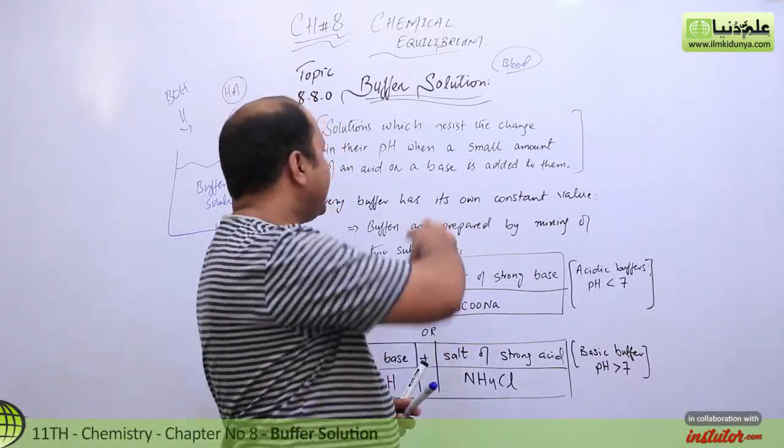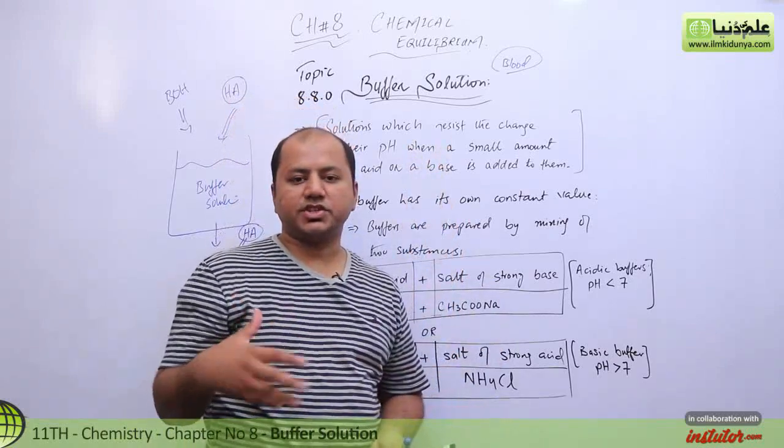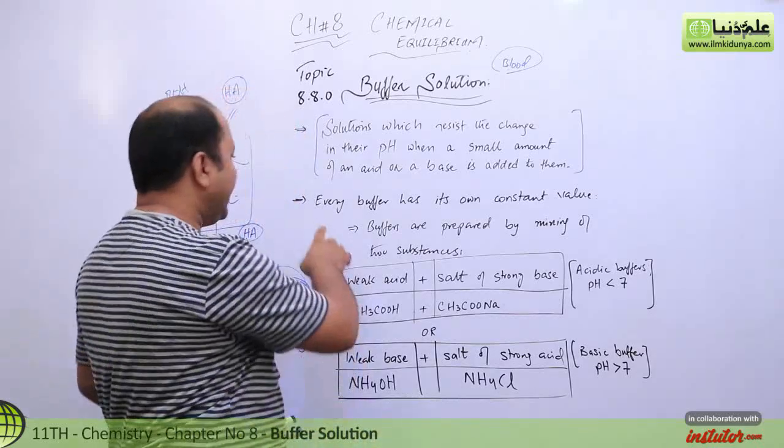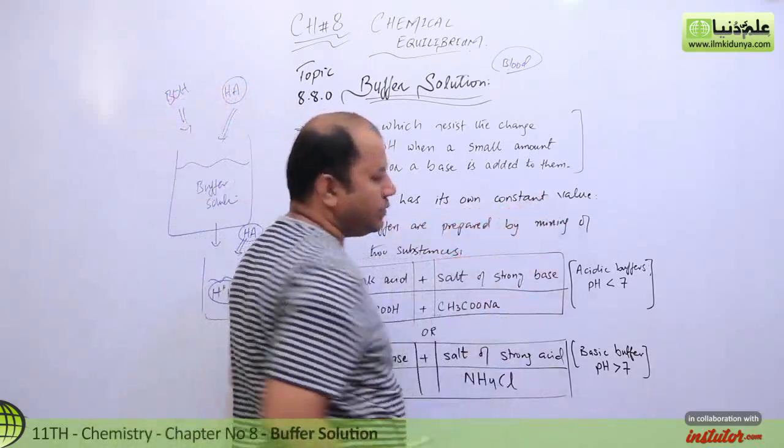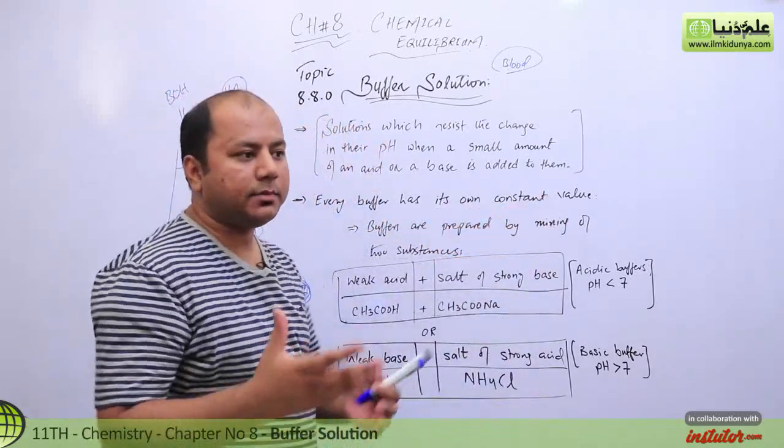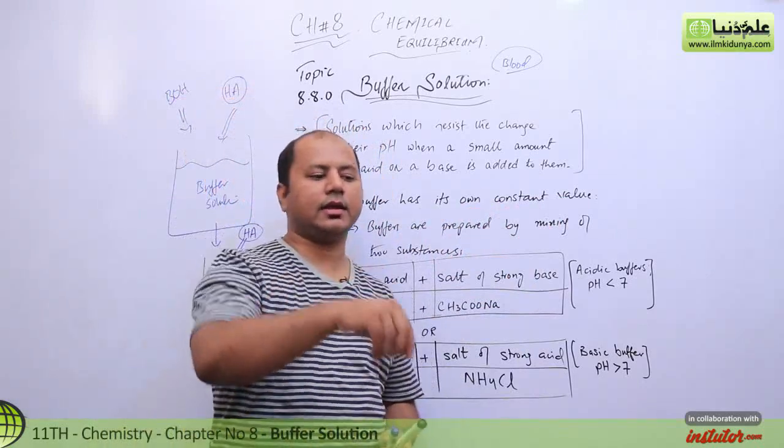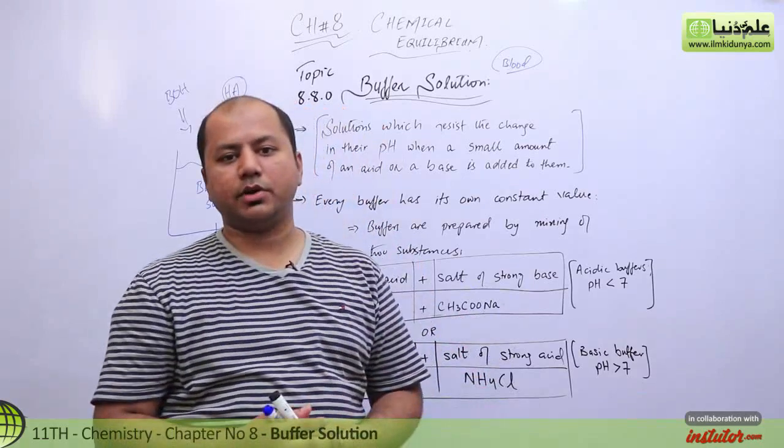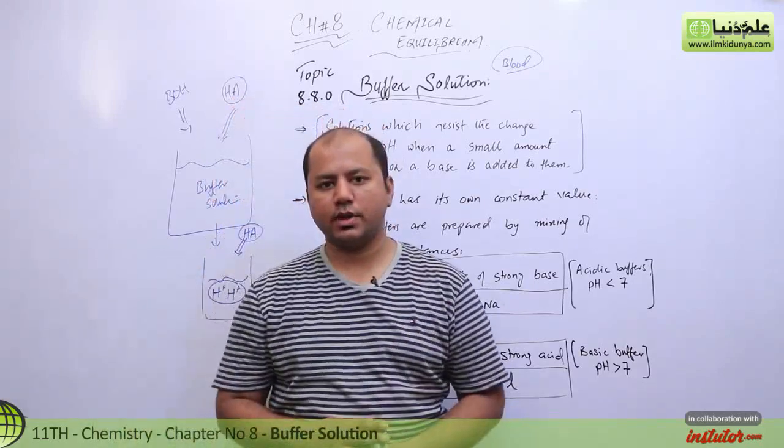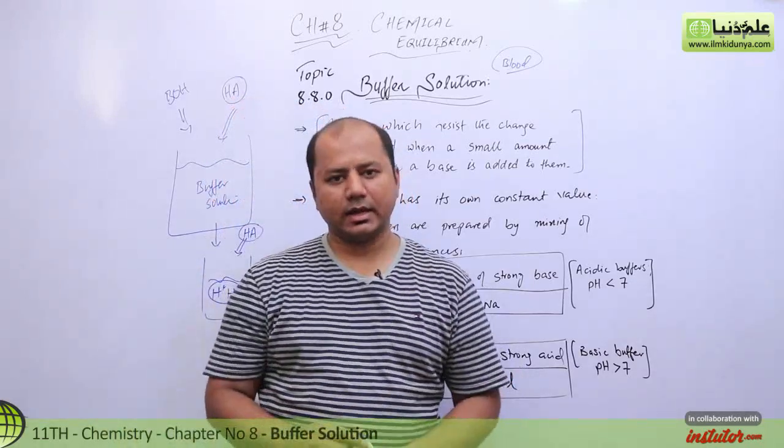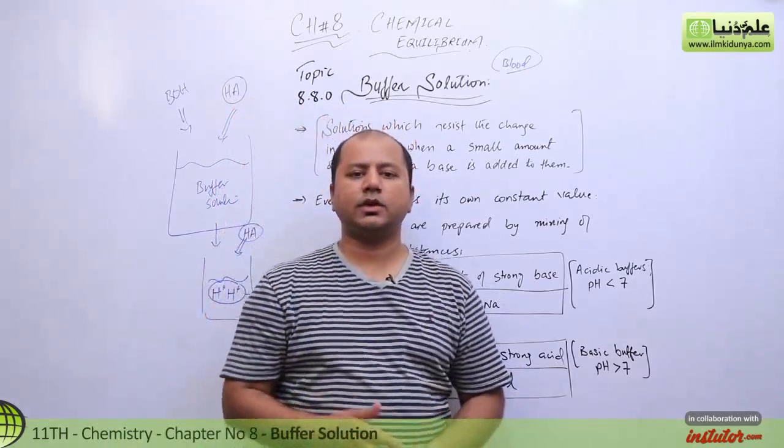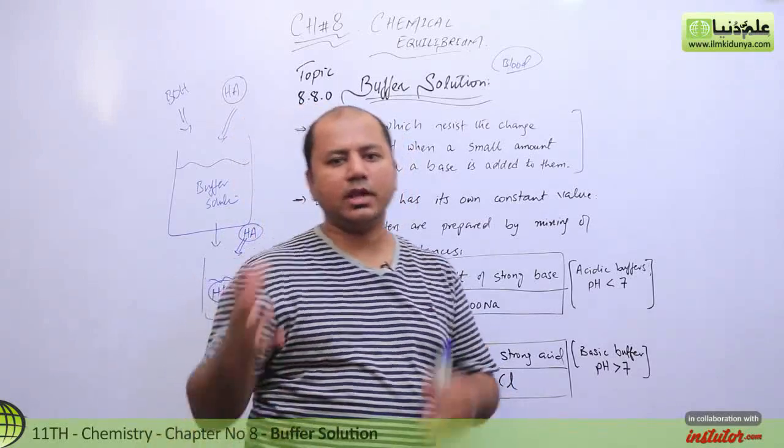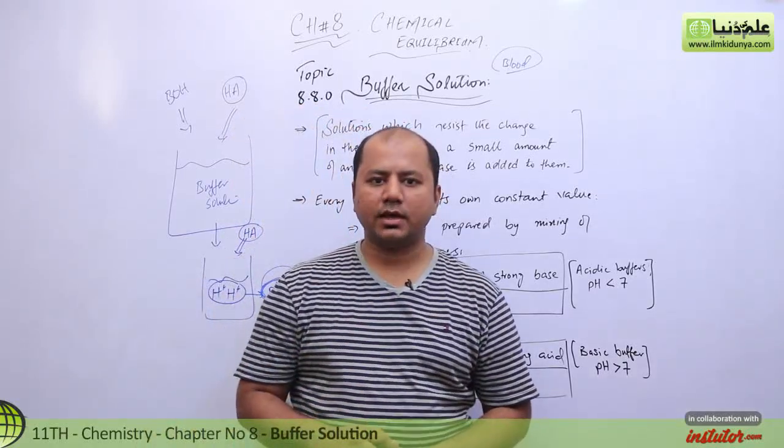Yaani jab aap acid ya base add karein toh wo pH ki change ko resist kare. Every buffer has its own constant value. It has a capacity to hold. Let's say that we have a solution of 500 centimeter cube. Aap 100 centimeter cube solution mein acid daal diya toh sustain kar liya aapne. 200 centimeter cube daal diya us ko sustain kar liya. Lakin what if agar aap 300 centimeter cube daal denge ya utna hi maun ka solution samne denge jitna ka already iske andar maujood hai?